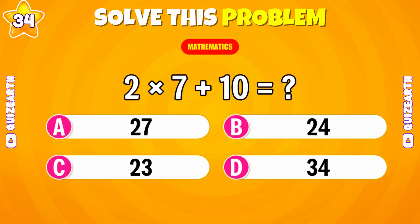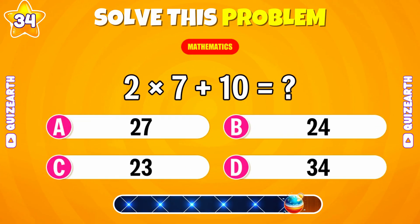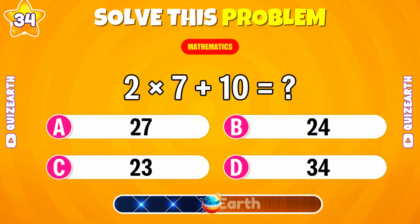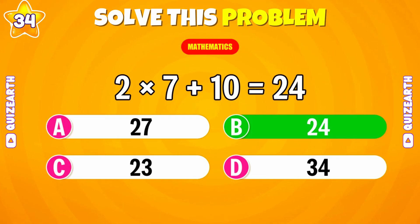Let's see. 2 times 7 plus 10? Wonderful. It's 24.